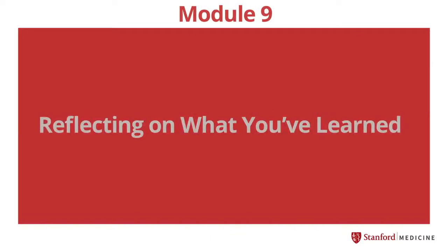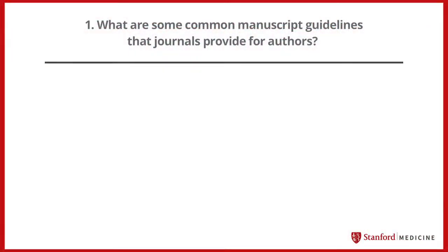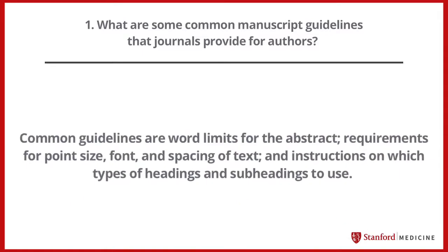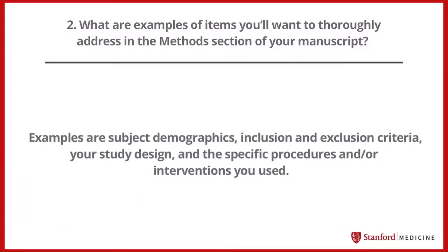Now we'll ask you to reflect on what you've learned. What are some common manuscript guidelines that journals provide for authors? Common guidelines are word limits for the abstract, requirements for point size, font, and spacing of text, and instructions on which types of headings and subheadings to use. What are examples of items you'll want to thoroughly address in the methods section of your manuscript? Examples are subject demographics, inclusion and exclusion criteria, your study design, and the specific procedures and/or interventions you used.